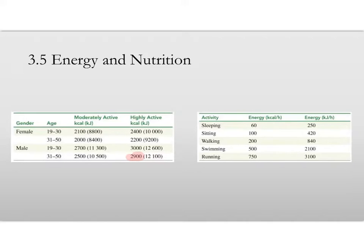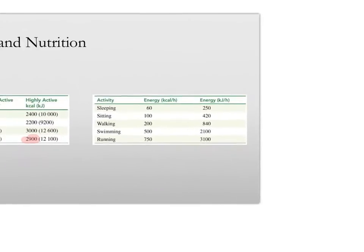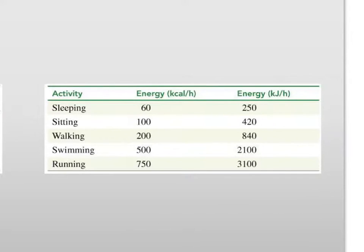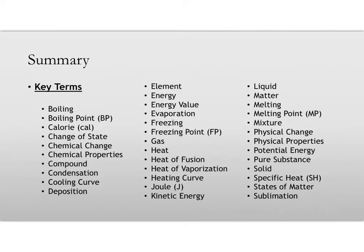The table on the right shows you some energies based that each activity is going to waste per hour. So sleeping, you're gonna use 60 calories per hour. Sitting, you just sit there and do nothing, uses up 100. Running all the way up to 750 kilocalories per hour.